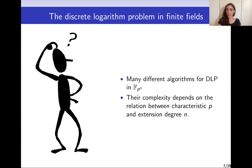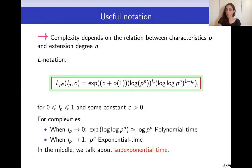On the finite field side, discrete logarithm algorithms have evolved a lot in the past decades. There are many of them, and their complexities often depend on the relation between the characteristic p and the extension degree n of a finite field FPN. One useful way to express this relation is to use the L notation. This L notation is given by the formula in the green box, which depends on two parameters LP and C, defined as the exponential of some constant C times log(Pn) raised to the power LP times log log(Pn) raised to the power 1 minus LP.